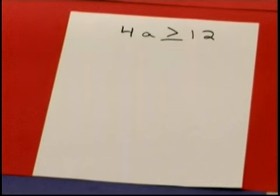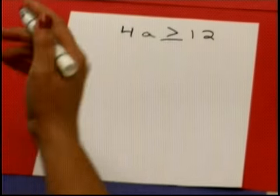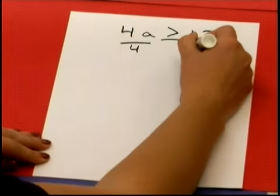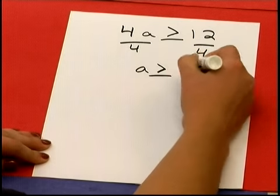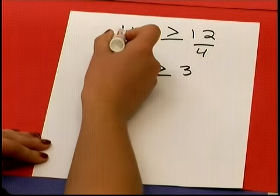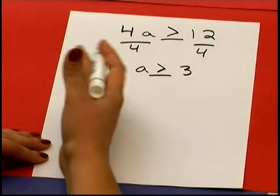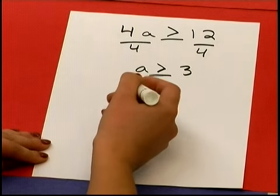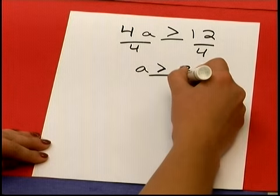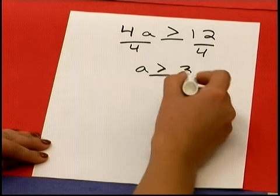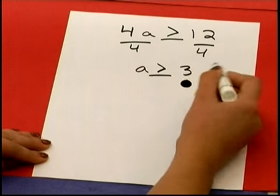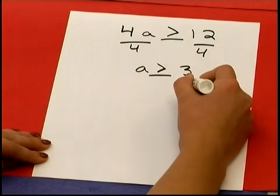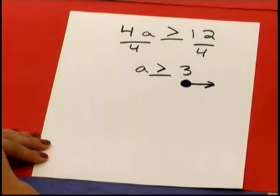For this problem, we have 4a is greater than or equal to 12. To solve, I isolate the variable by dividing by 4 on each side, and I'm left with A is greater than or equal to 3. Since 4 is a positive number, there's no need to reverse the inequality. To graph this, I draw my circle, fill it in since it's greater than or equal to, and shade right — A is all numbers greater than or equal to 3.